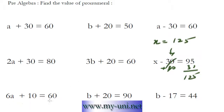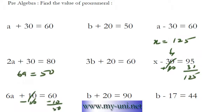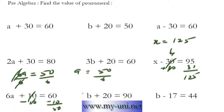6A plus 10 is equal to 60. So we can subtract 10 from both sides of the equation. 10 will cancel out. This is 50. 6A is equal to 50. Now we'll get rid of 6 by dividing both sides of the equation by 6. A is equal to 50 over 6.